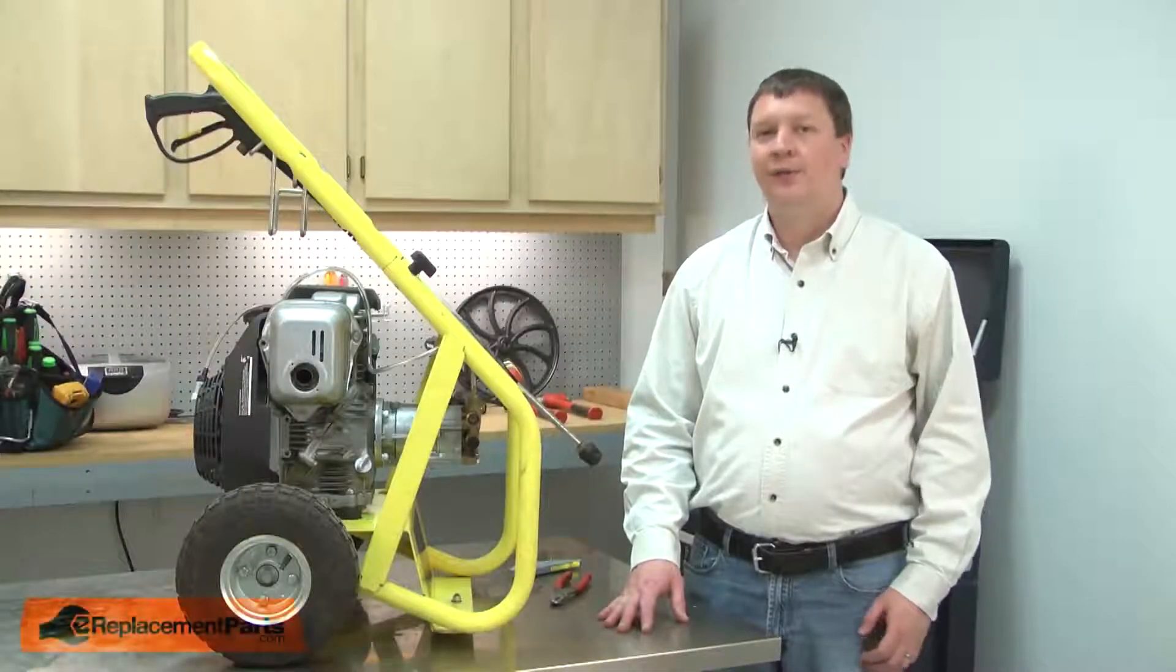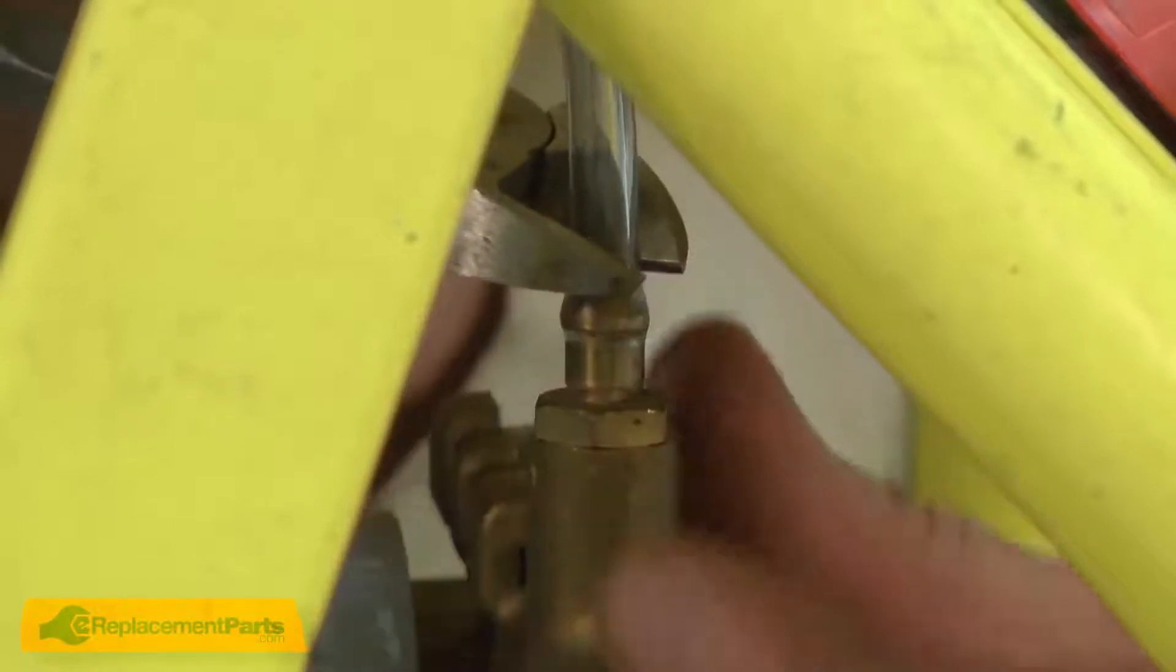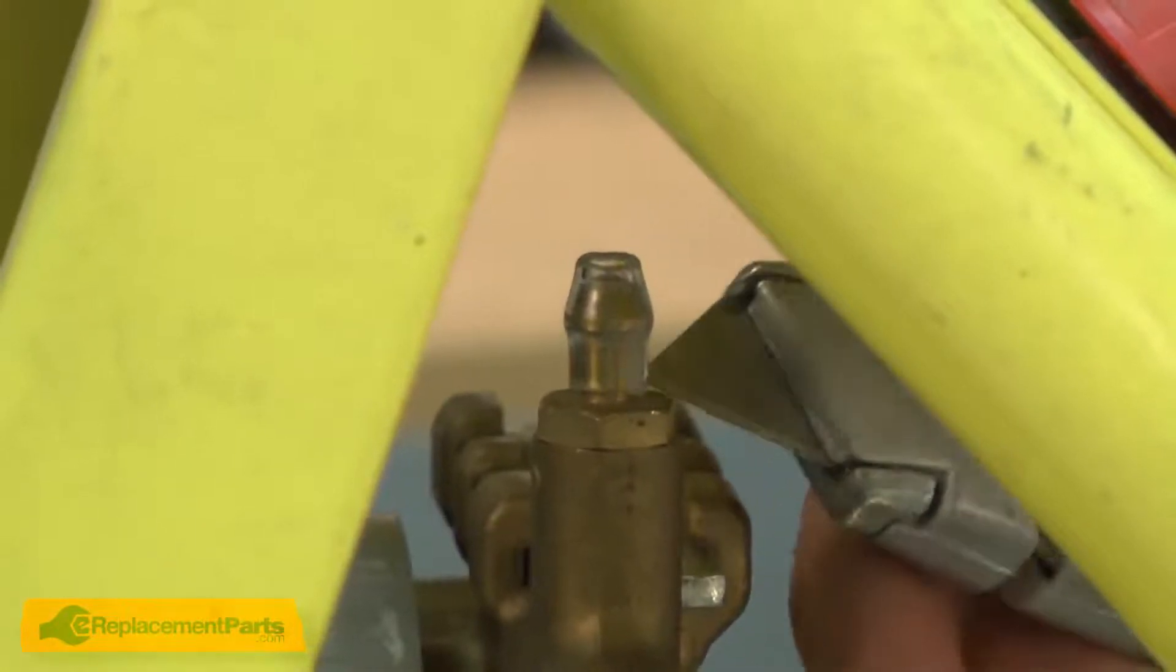I'll begin by removing the hose from the detergent valve. I'll use a pair of cutters to cut the hose free from the detergent valve stem and a knife to slice the remaining piece off.